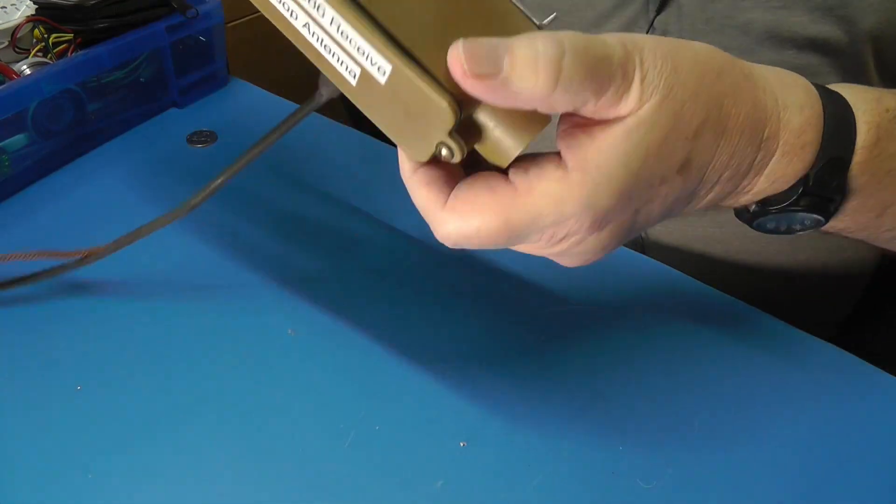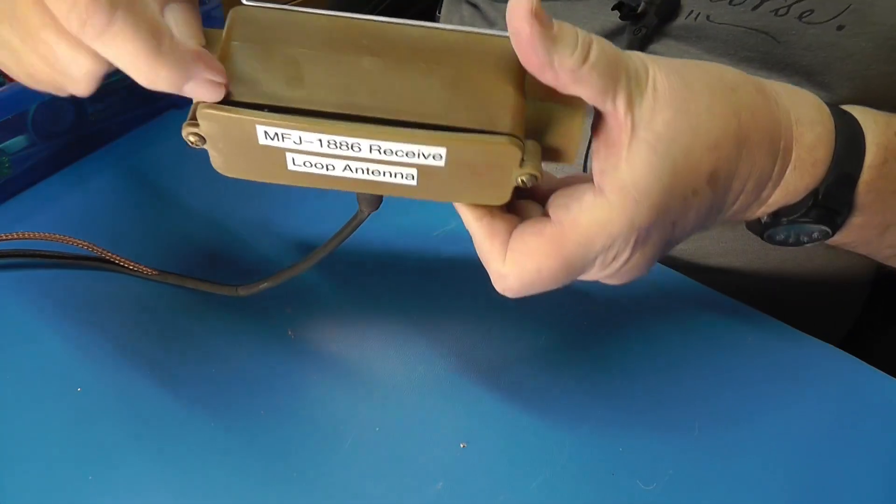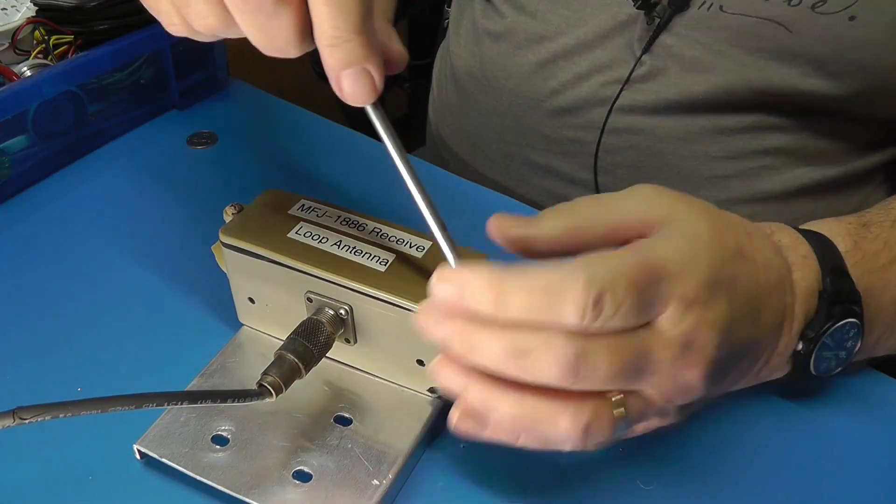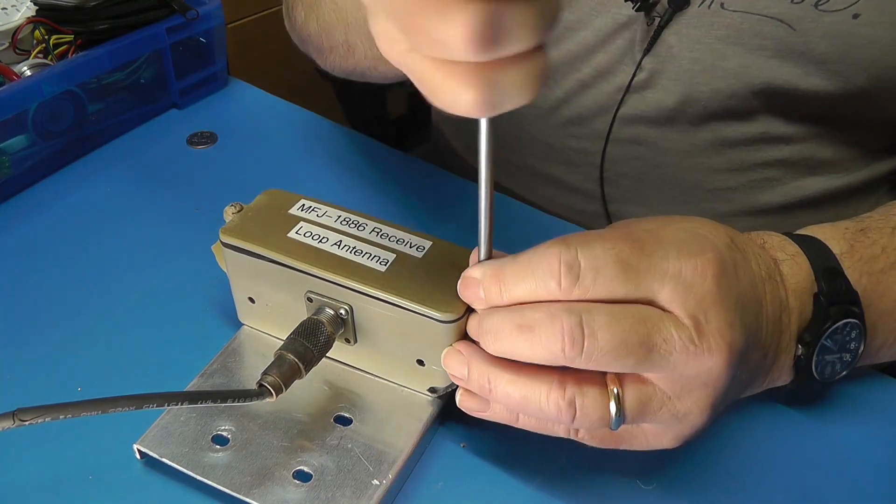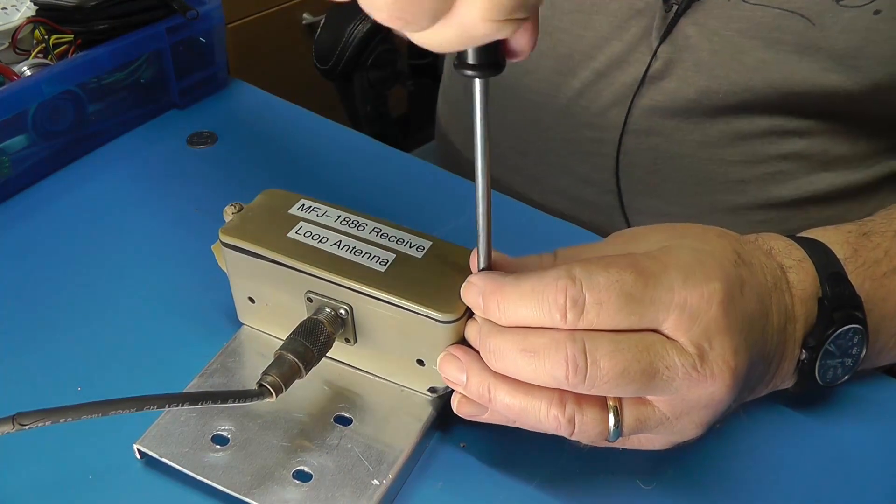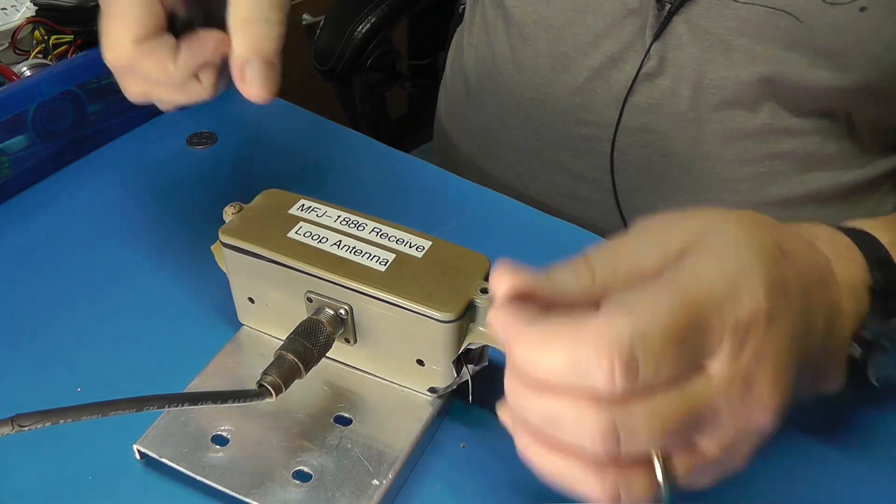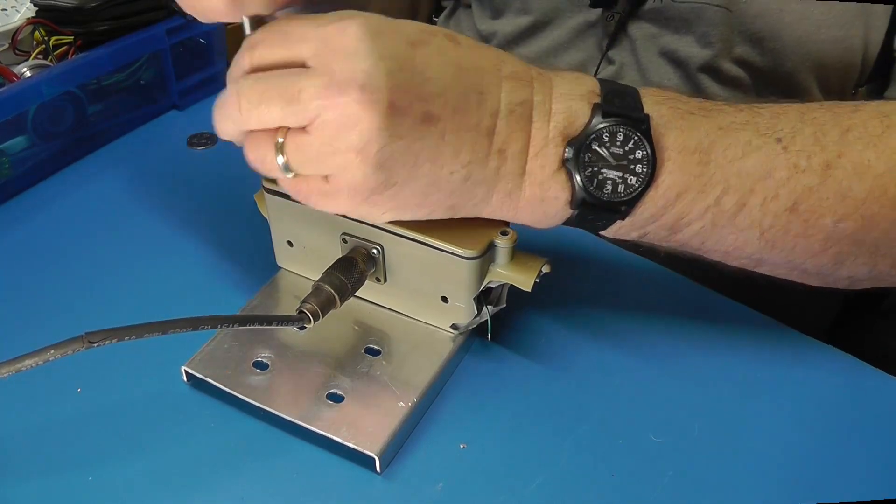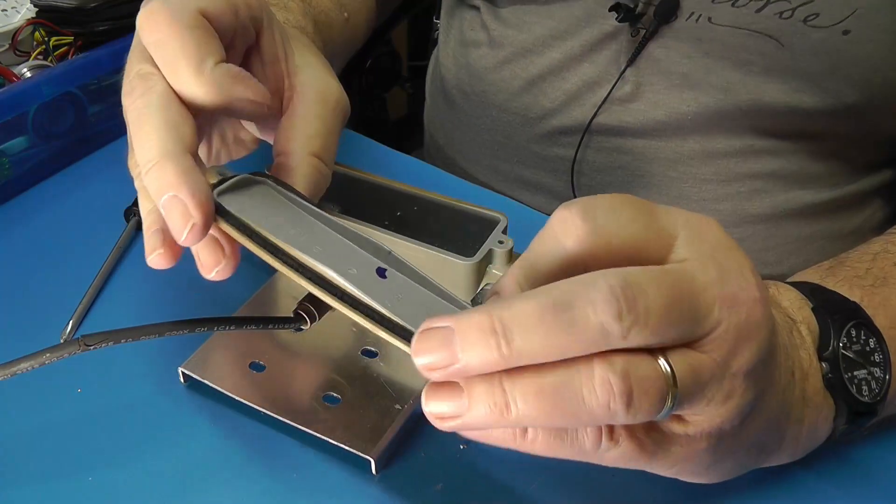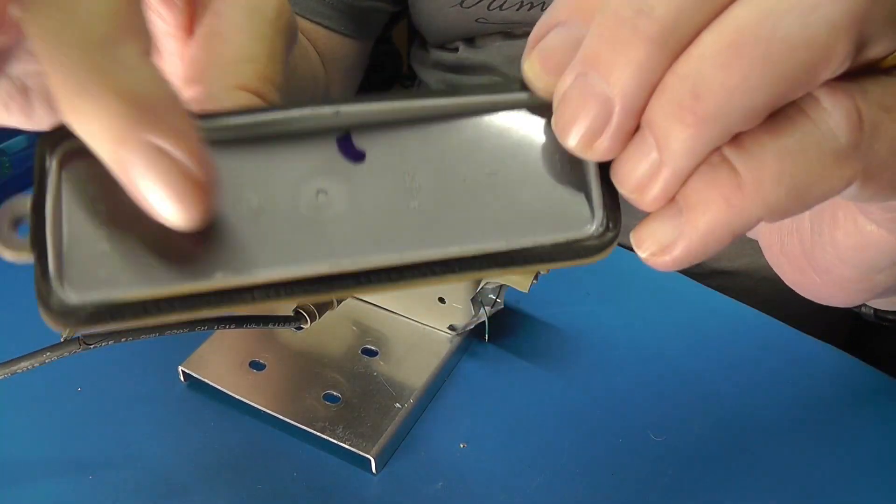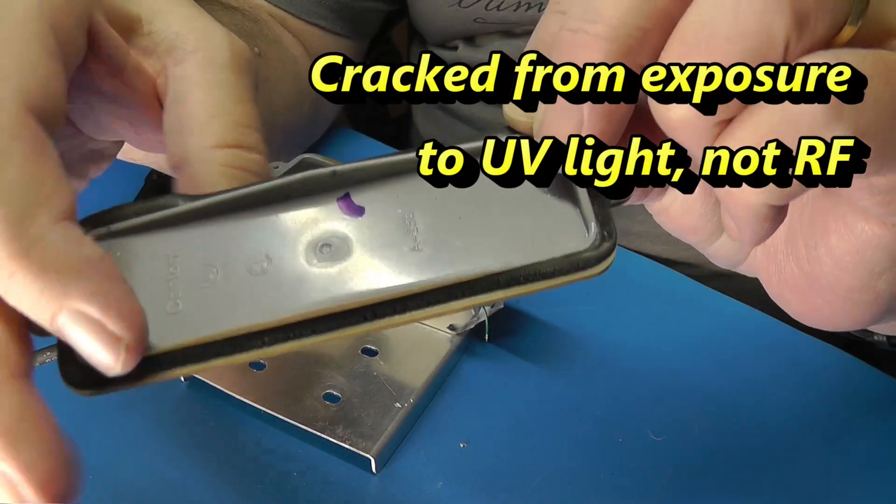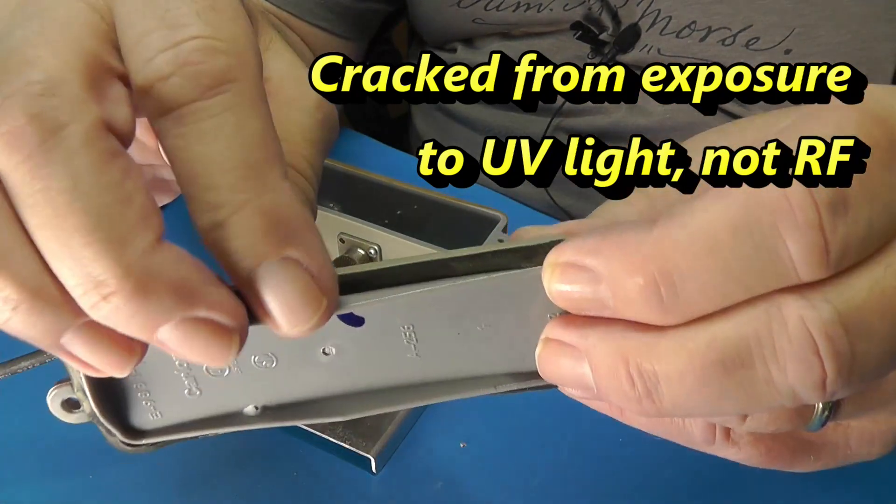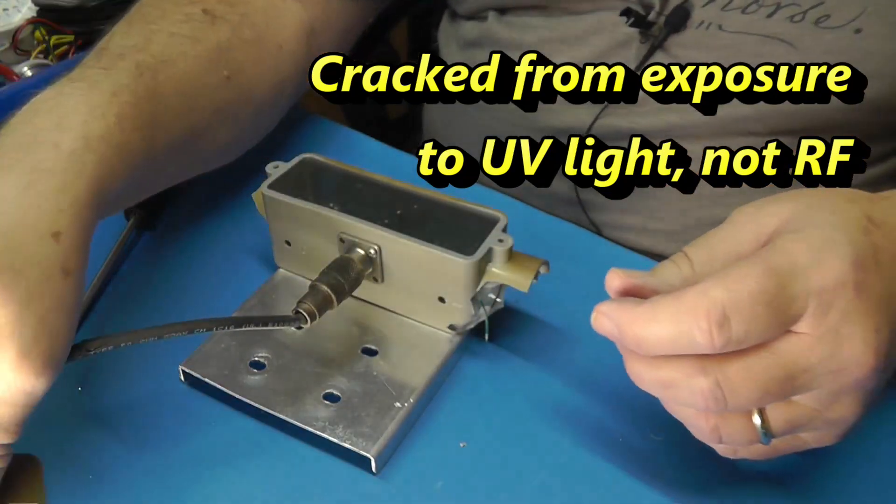Note that the cover here has warped and that the gasket right here is open so that water can get in. Fortunately we live in a very dry climate so the amount of water that gets in would probably be very little. Okay there comes the top and you can see here how the gasket on the top is all cracked from exposure to UV light, not RF, whereas the gasket on the other side which is in the shade is intact.